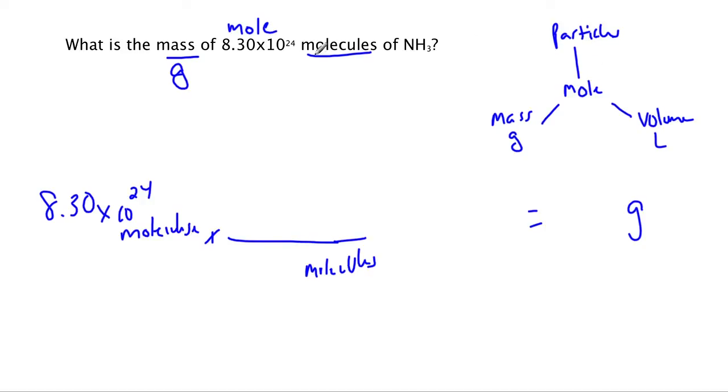So we're gonna start with particles, because we're given an awful lot of particles. We're gonna convert to the mole, then we're gonna go from the mole to the mass. So we have a two-step problem.